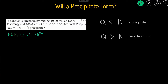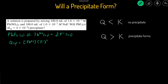We approach it the same way by first writing the dissociation reaction of the possible precipitate PbF₂. That breaks up into Pb²⁺ aqueous and 2F⁻ aqueous. F is a negative charge because it's a halogen; each F⁻ is negative 1, so total is negative 2, meaning Pb must be positive 2 to balance. Then we write the Qsp expression: concentration of Pb²⁺ times concentration of F⁻ squared, with the solid ignored on the bottom.